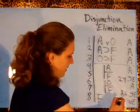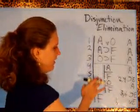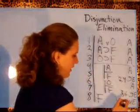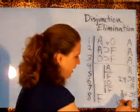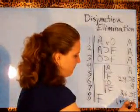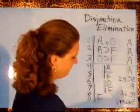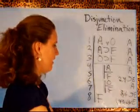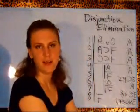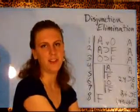And then we cite the two subderivations that we used. Lines four through five, four through five, and line six through seven, six through seven. And that is the completed proof for an example of disjunction elimination.